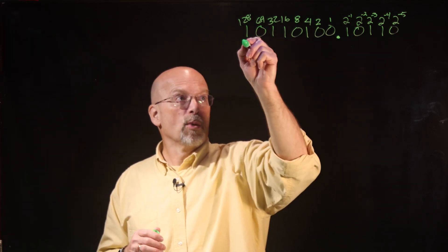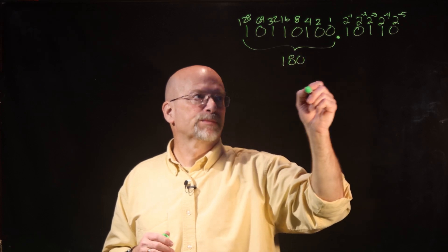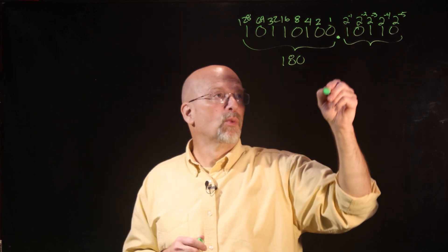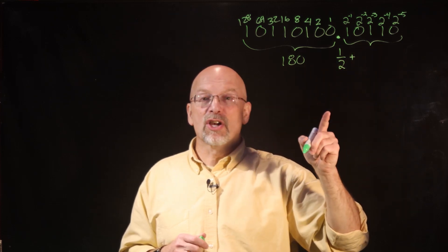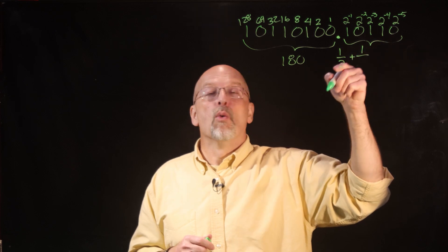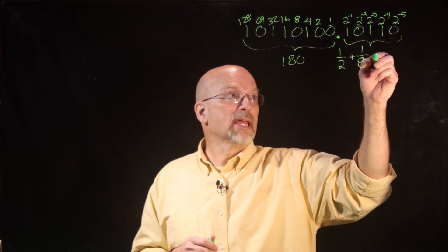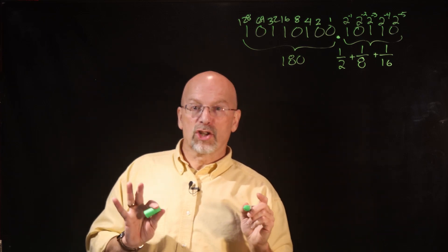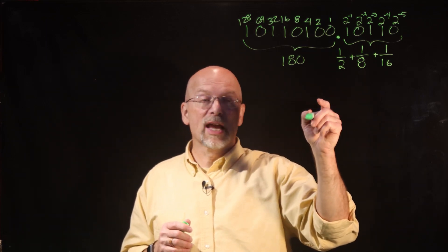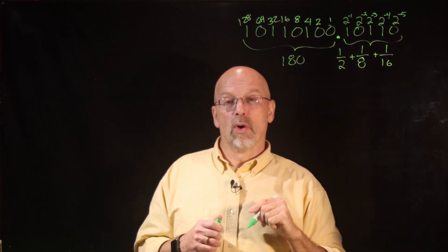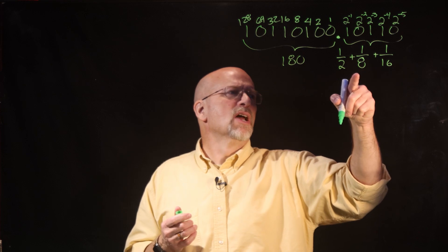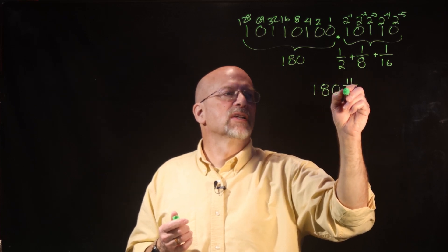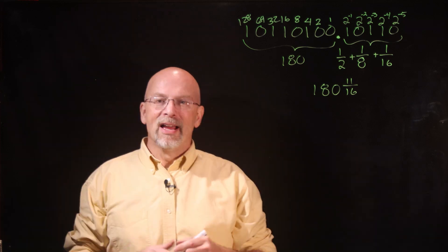We've already shown the integer portion equals 180. For the fractional portion: there's a one in the two-to-the-negative-one position, which is one-half; a one in the two-to-the-negative-three position, which is one-eighth; and a one in the two-to-the-negative-four position, which is one-sixteenth. So the total is 180 plus one-half plus one-eighth plus one-sixteenth — that's two-sixteenths plus eight-sixteenths, giving us 180 and eleven-sixteenths.